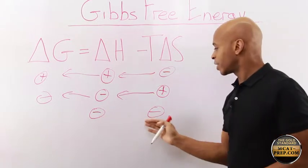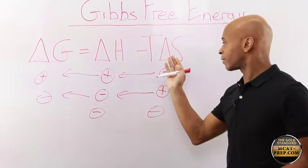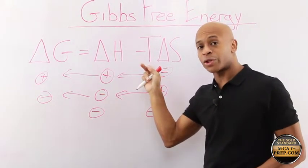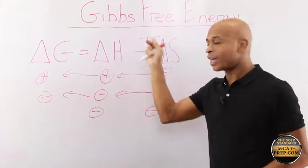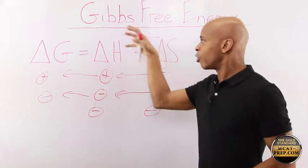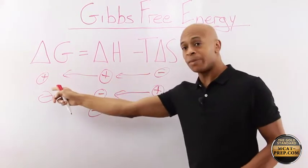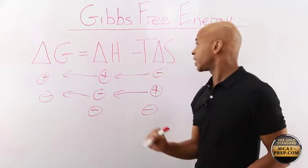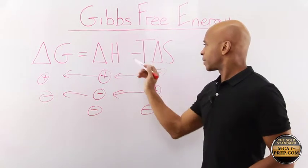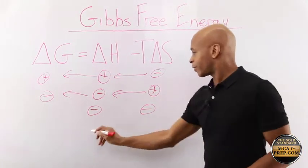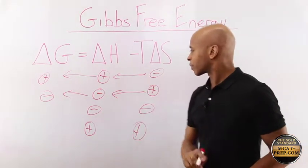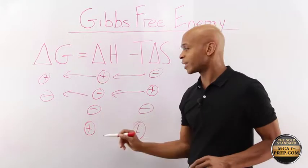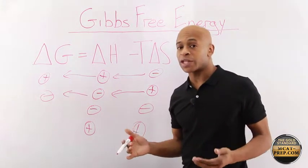Here's an exothermic reaction. But if delta S is negative, making this positive, everything depends on the value of the temperature, the magnitude of the temperature. If the temperature is very high, it makes this term extremely positive, and then it overrides the negative delta H, and then it can make delta G positive. So it really depends on the temperature. That creates delta G that's positive. The reason why that's important is because delta G being positive means that the reaction would not be spontaneous.